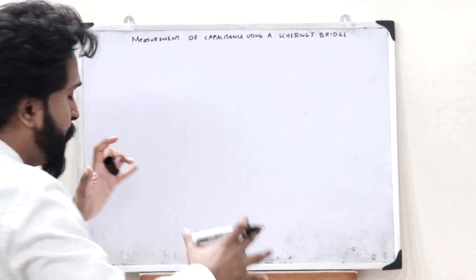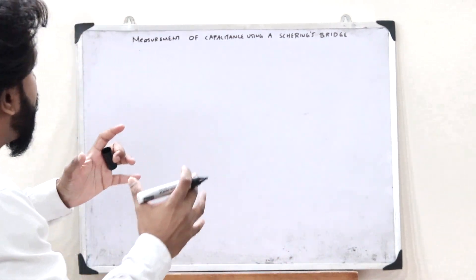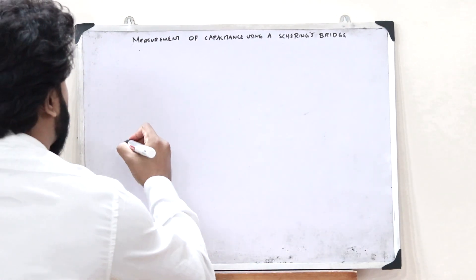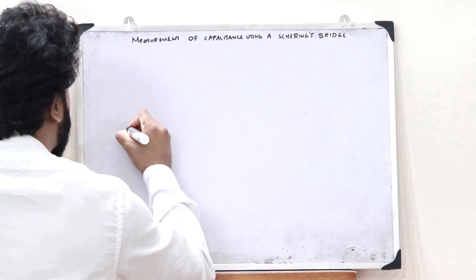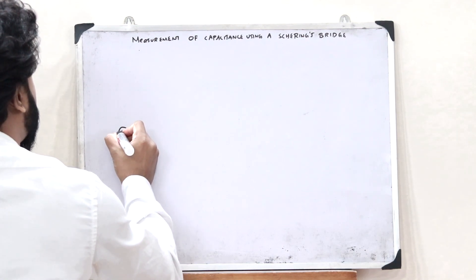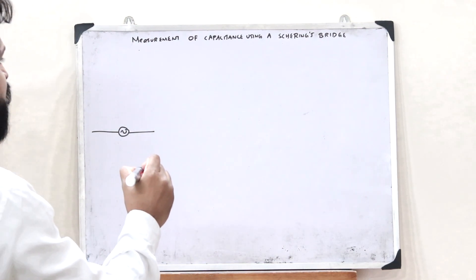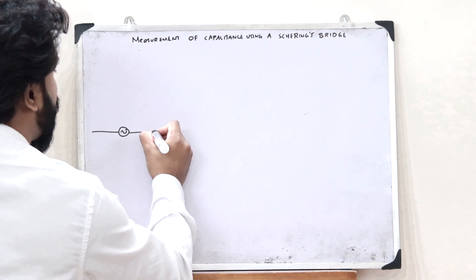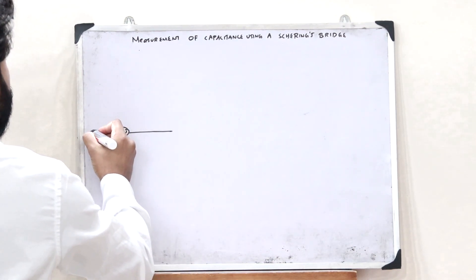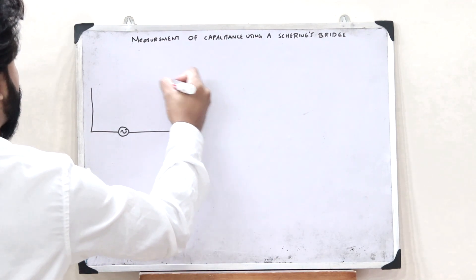A Schering's bridge is a bridge-like structure that operates on an AC voltage. First, let us consider an AC voltage source. Towards this particular AC voltage source, a bridge-like structure is connected, which is referred to as the Schering's bridge. The bridge would look somewhat like this.